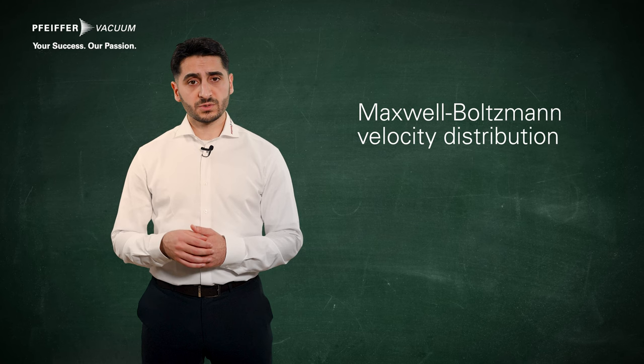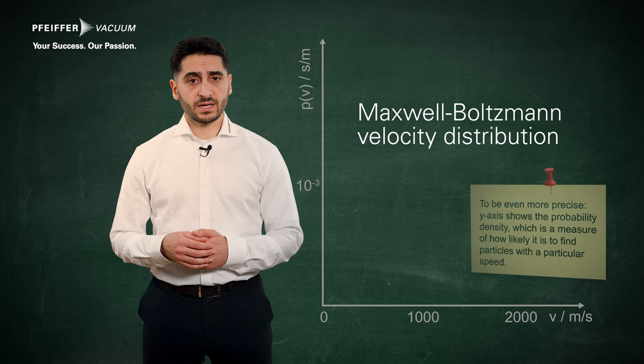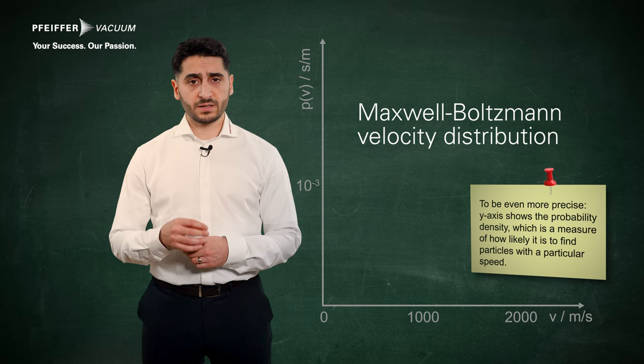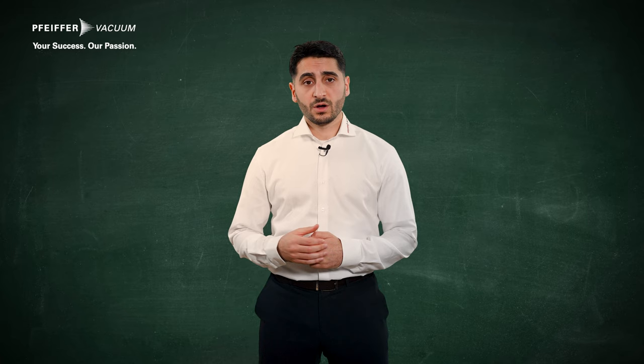The Maxwell-Boltzmann velocity distribution can be used to illustrate how the velocity distribution of the particles looks like. The x-axis shows the velocity of the individual particles and the y-axis shows the number of particles. Therefore it shows how often the different particle velocities occur.